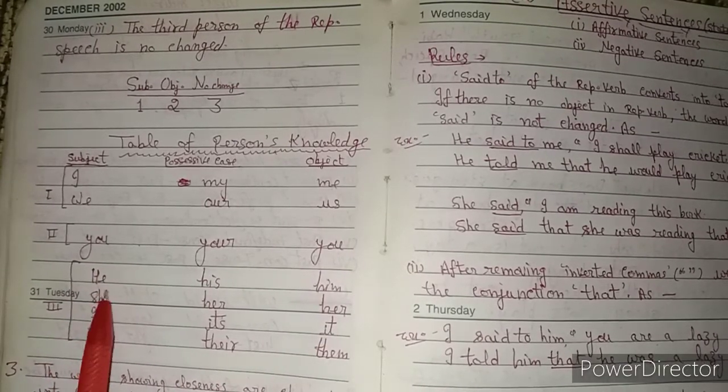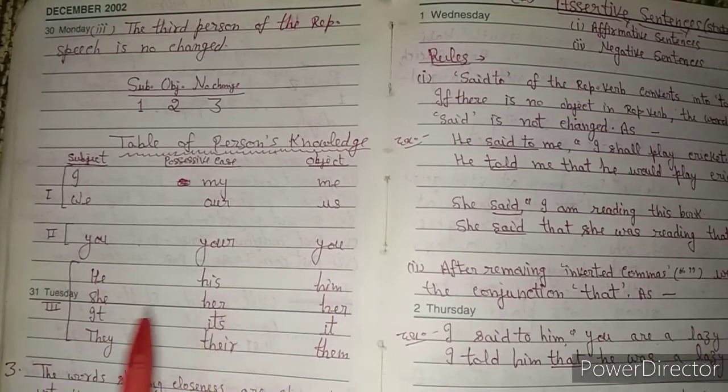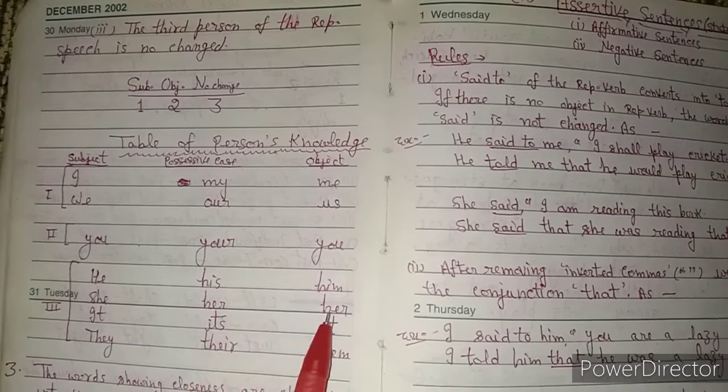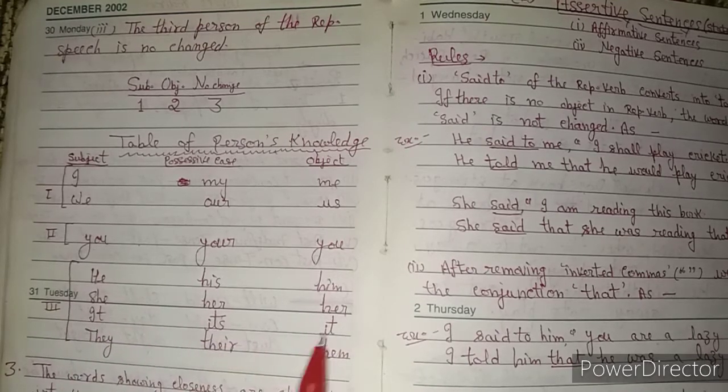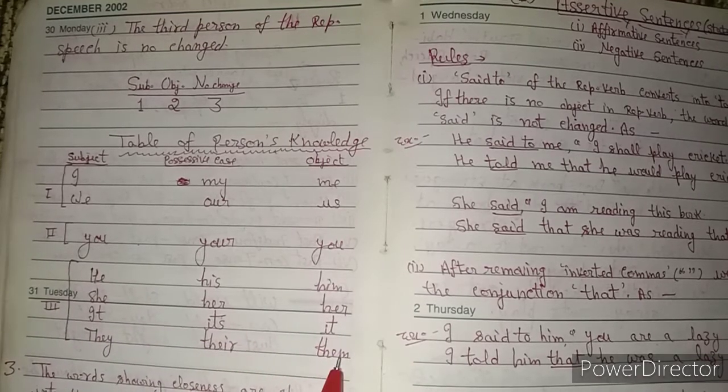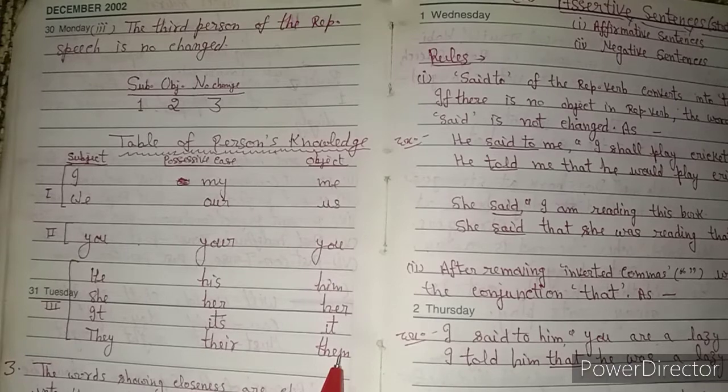Third person pronouns: He — His — Him; She — Her — Her; It — Its — It; They — Their — Them.